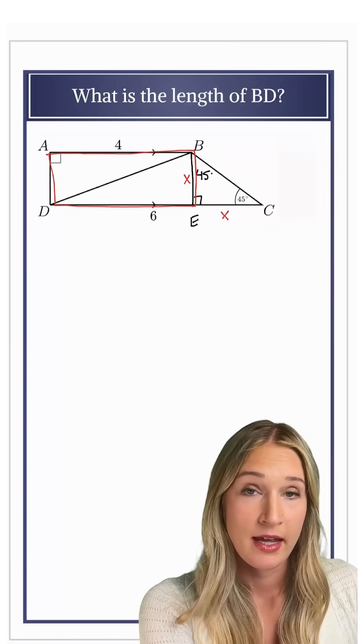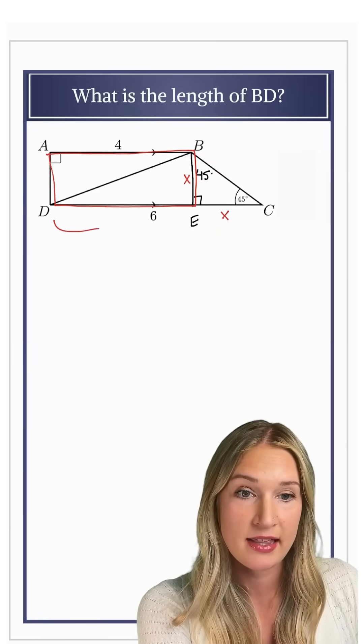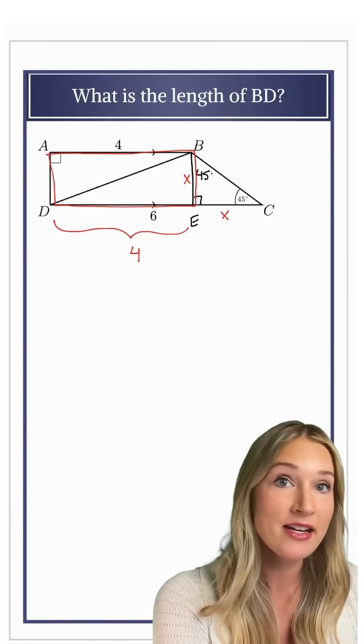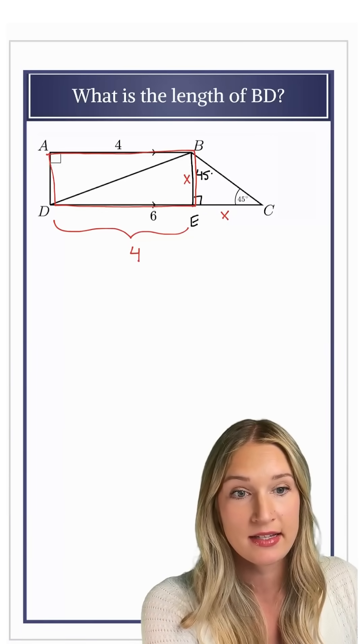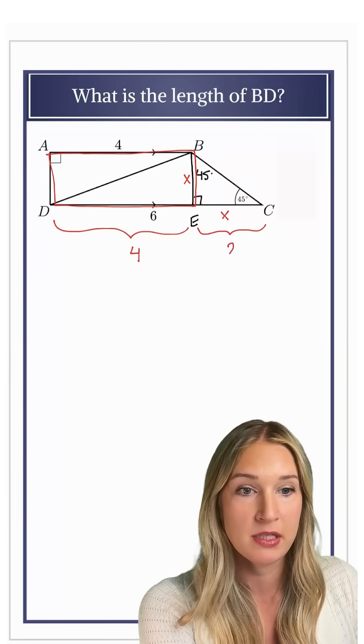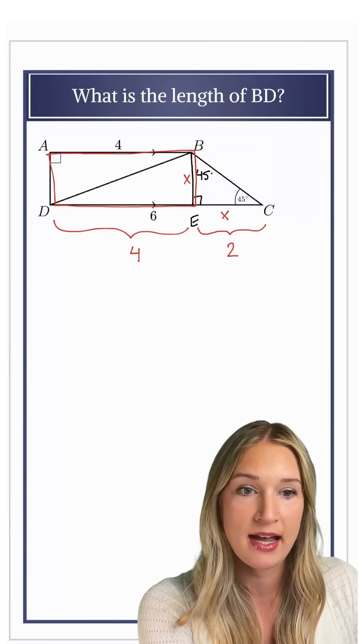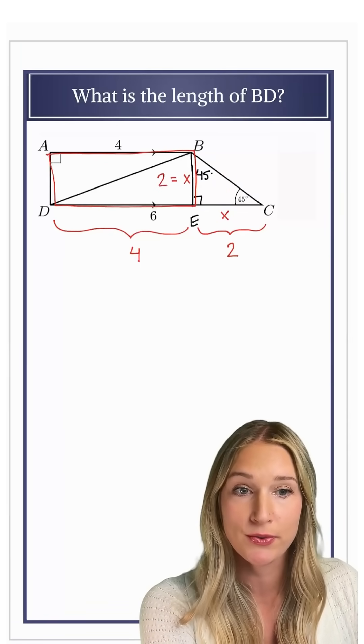And that's helpful because I can say that DE then is 4, and since the entire length DC is 6, this length must be 2. So X is 2, which means that my height is also 2 from here.